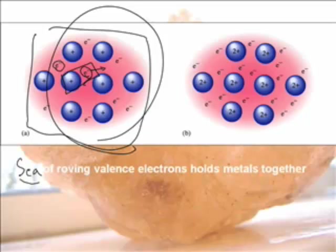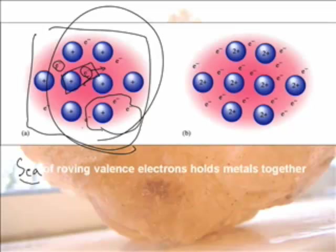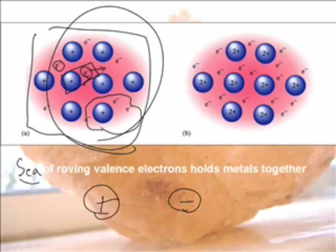The electrons kind of randomly move around. If you get an area that has more electrons for just a moment — it's like community bikes in Portland or Paris, where you just grab a bike and ride. If you get a bunch of bikes on one side of the city, that side has a negative charge. When they move to the other side, you get positive and negative regions, and positive things are still attracted to negative things. Since the electrons are free to move, that explains why metals conduct electricity.